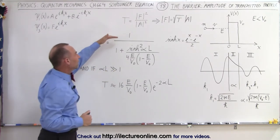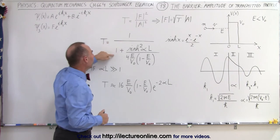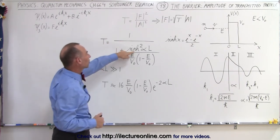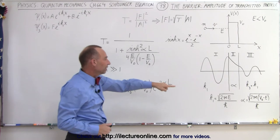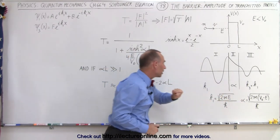It's 1 divided by 1 plus the hyperbolic sine of alpha times L. Remember alpha is defined right here, and L would be the width of the barrier.